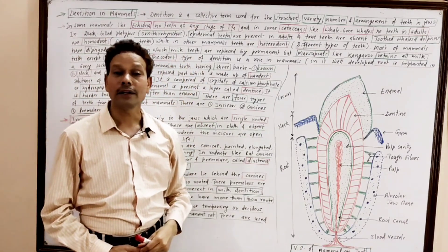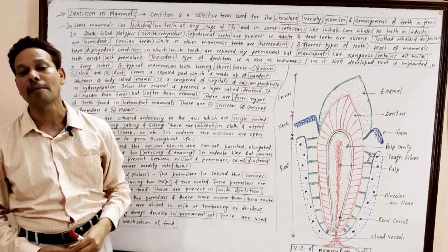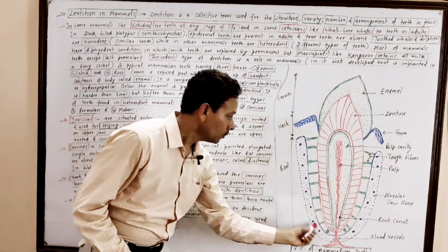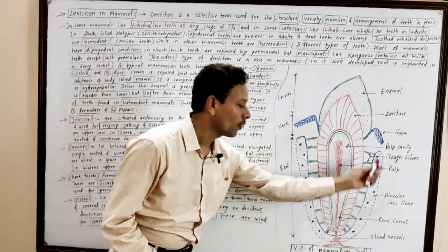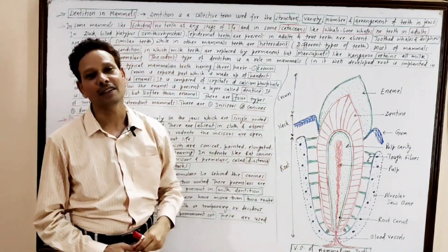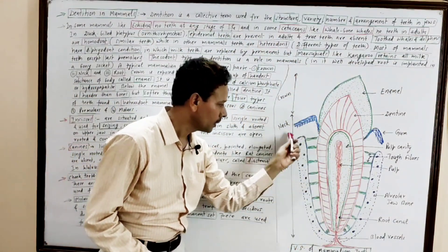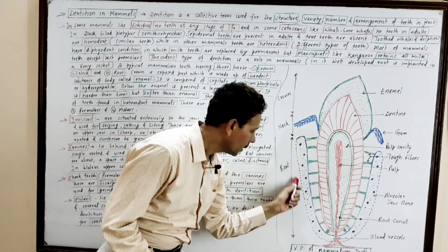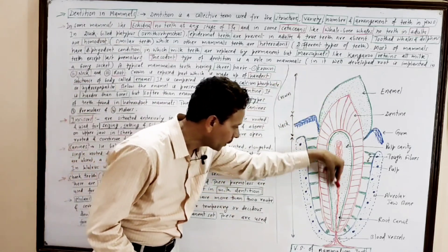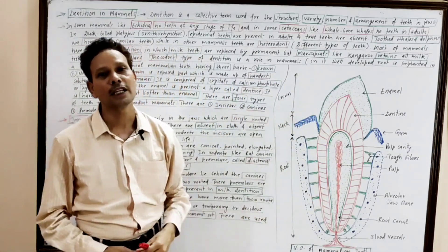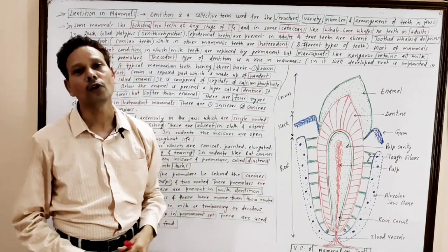Mammalian teeth are thecodont. That is a characteristic feature of mammals. The tooth is embedded in a bony socket. Such teeth are thecodont. The mammalian tooth is present in an alveolar bone. The bone produces a socket, a cavity. In that cavity, mammalian tooth is present. Such kind of teeth are thecodont.